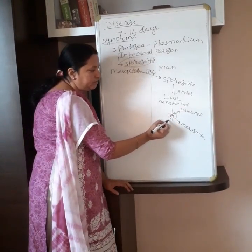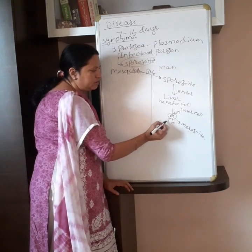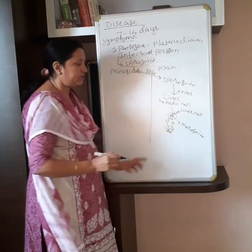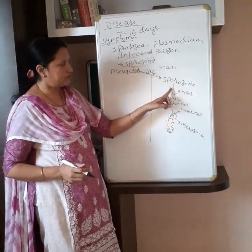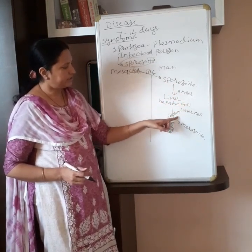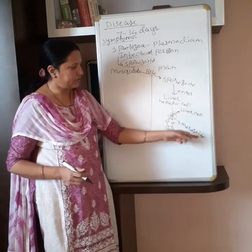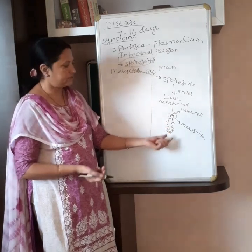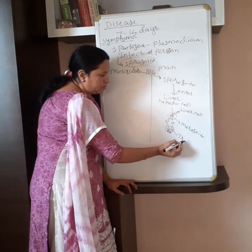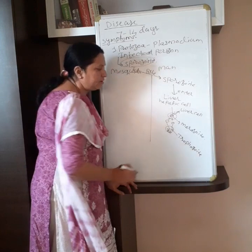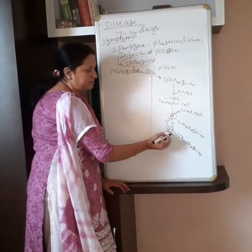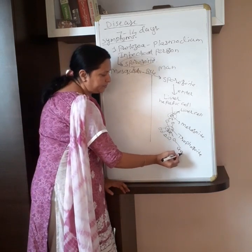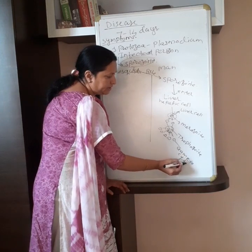The merozoite ruptures the liver cells and enters into the bloodstream. From the blood they enter into the RBCs. In the RBC they develop as trophozoite. The trophozoite ruptures the RBC and comes into the bloodstream, and now they are called as gametocyte. So the stages are: first is sporozoite, second is merozoite which takes place in the liver, third is trophozoite which takes place in RBC. Many trophozoites and merozoites enter into many RBCs, and so there is rupturing of many RBCs, and the body gives a fever response.